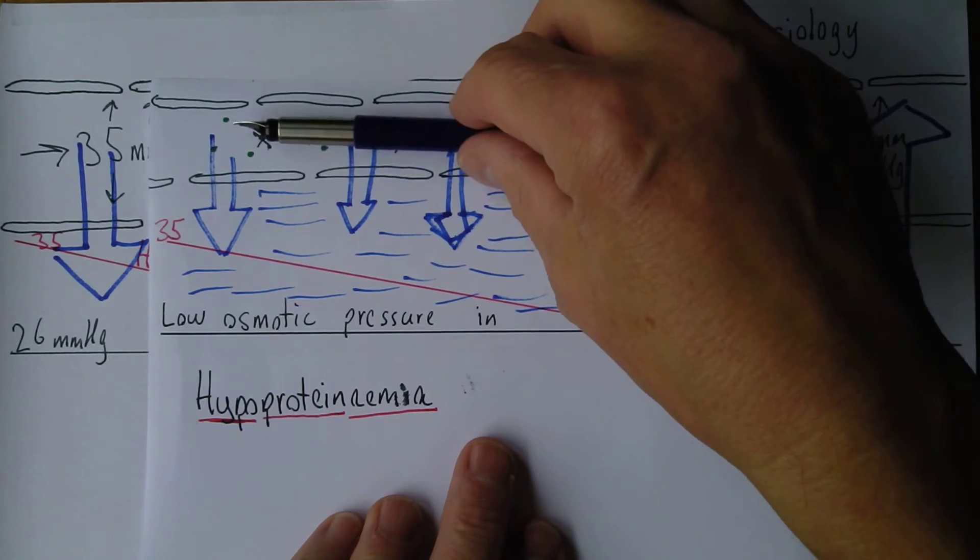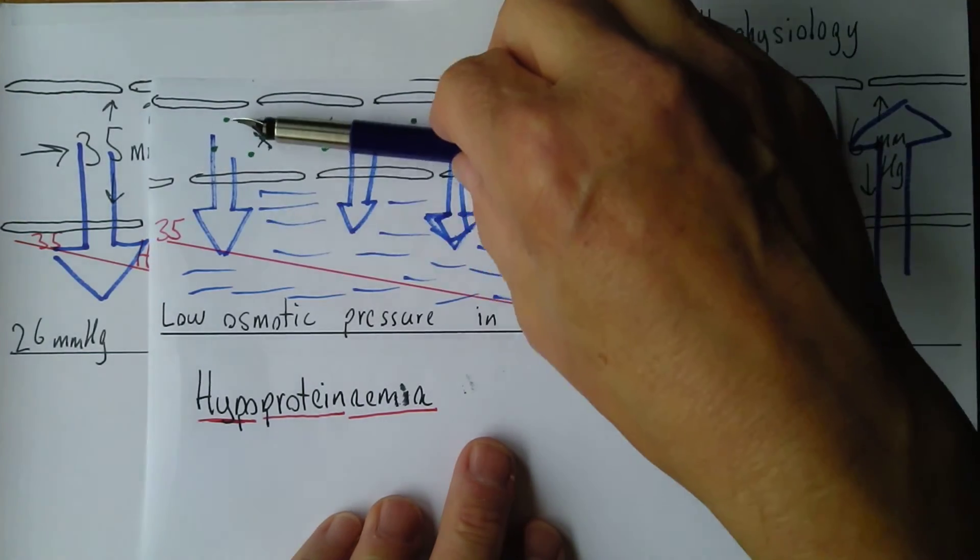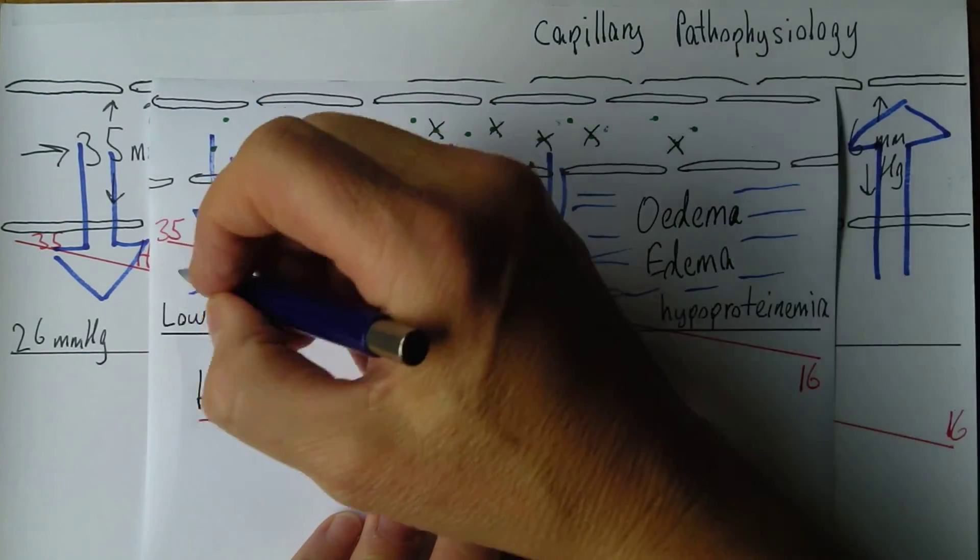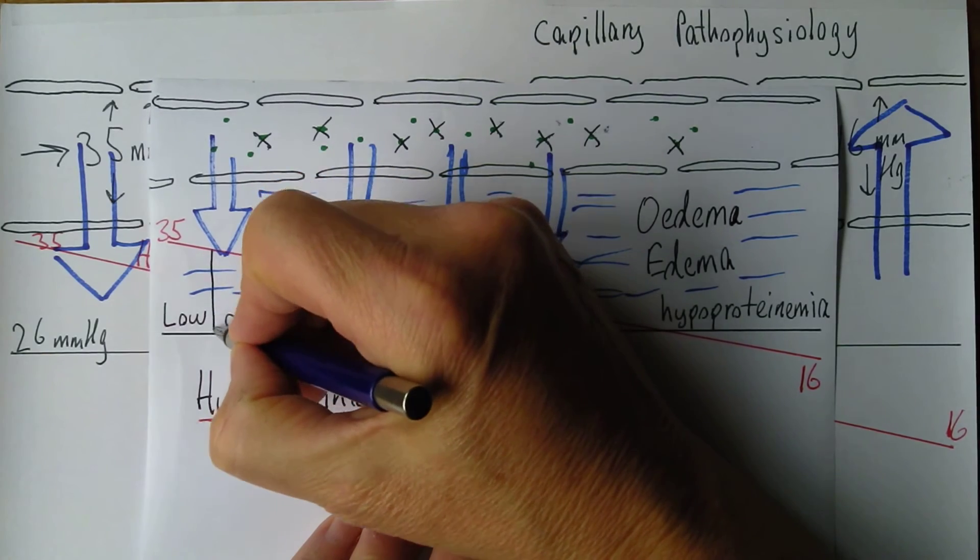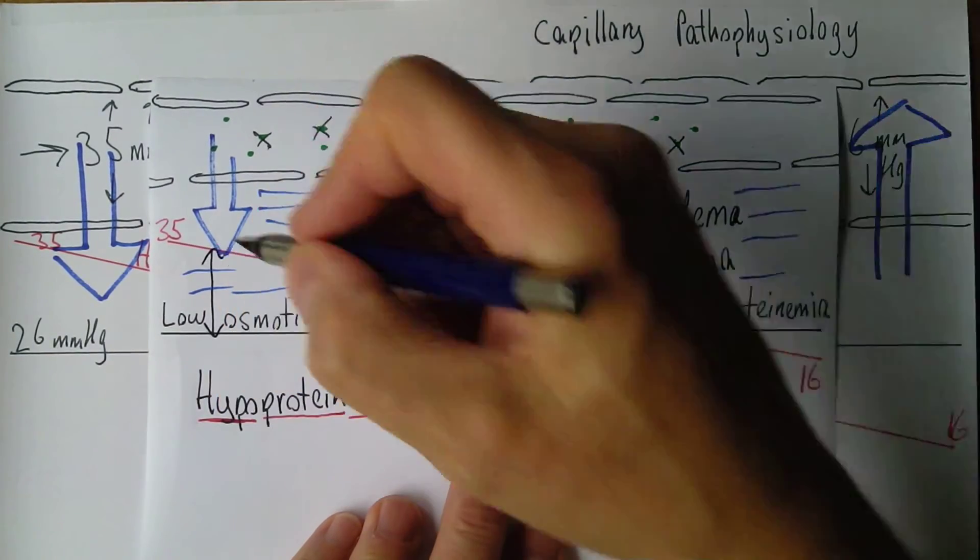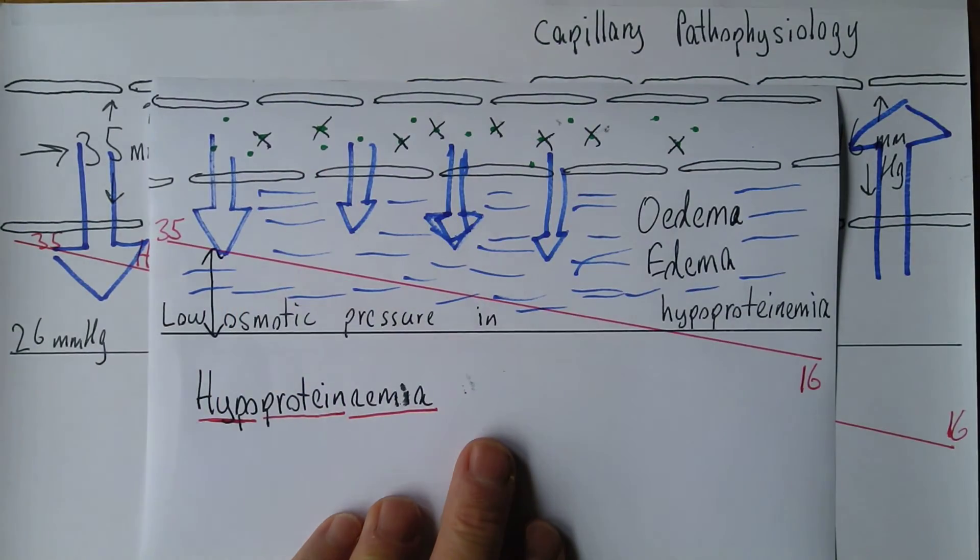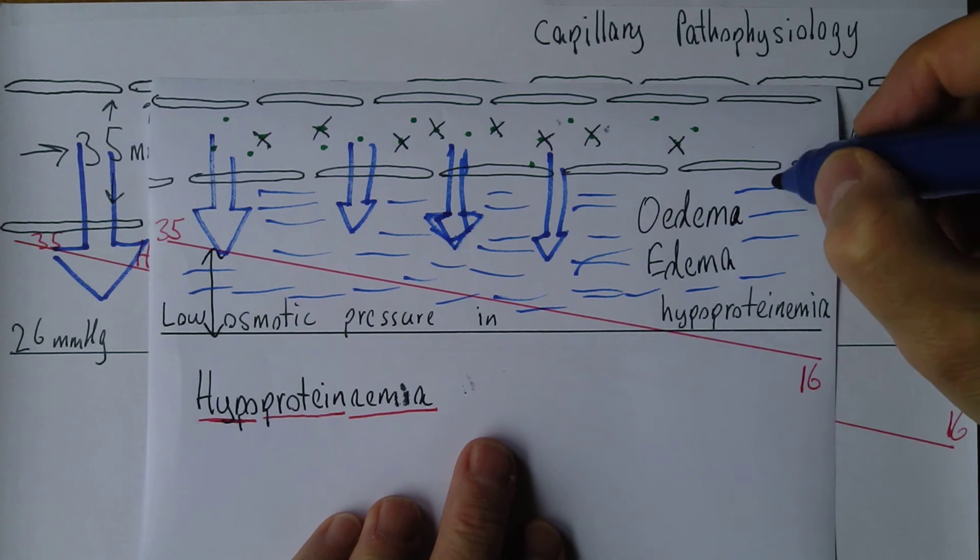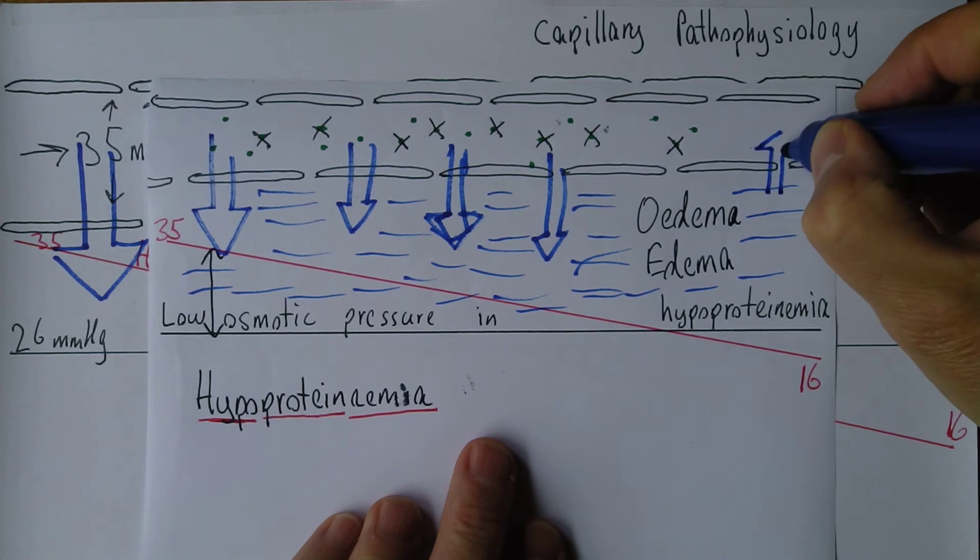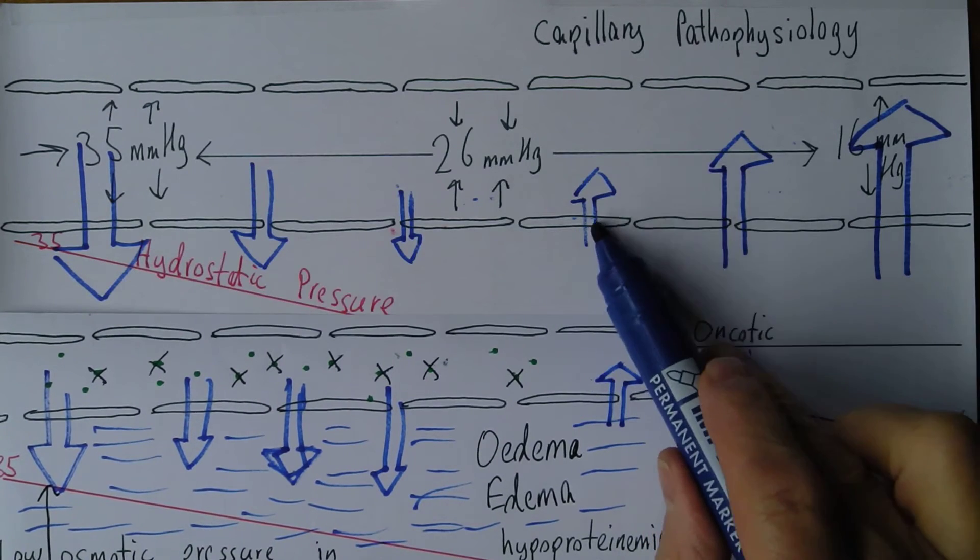Because there's more fluid being formed because of the greater differentiation between the hydrostatic and the oncotic pressure. But less is being reabsorbed. So here there's some being reabsorbed there, but it's less than we would like in the normal physiological situation.